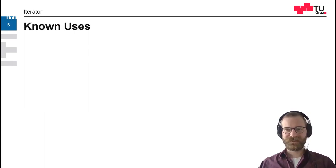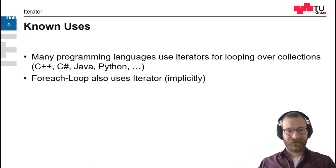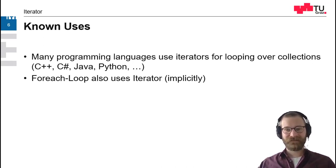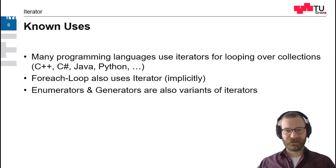Now to the known uses. Most programming languages use iterators for looping over collections. The foreach loop also uses the iterator implicitly. Of course, there are some performance considerations, but in the end every foreach loop has to fall back to an implicit iterator. Enumerators and generators are also variants of iterators in different languages.